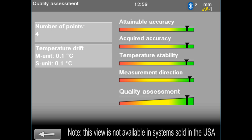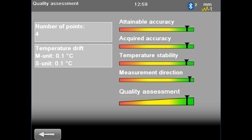The top four bars are quality factors affecting the measurement result: attainable accuracy, acquired accuracy, temperature stability and measurement direction. The bottom bar is the quality assessment. This is the sum of the four quality factors. This quality assessment is also available in the PDF alignment report.